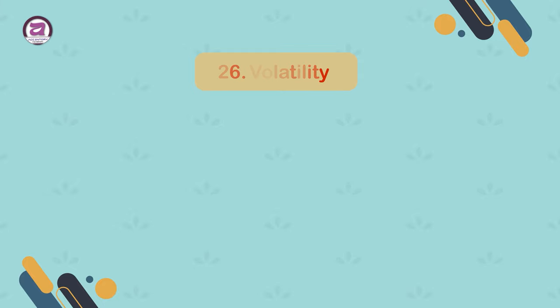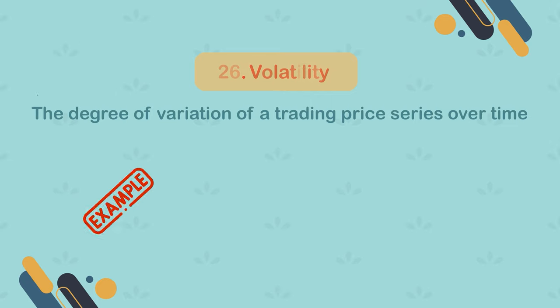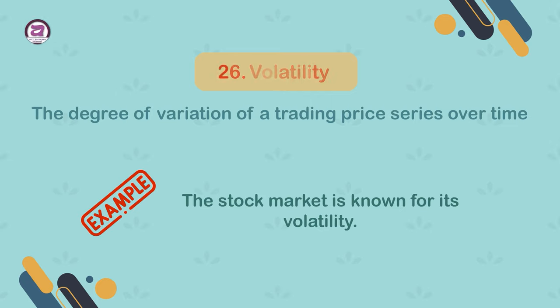26. Volatility. The degree of variation of a trading price series over time. Example: the stock market is known for its volatility.